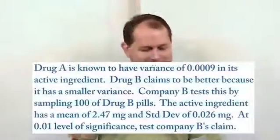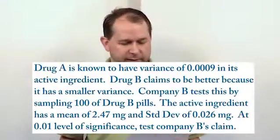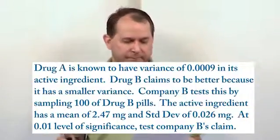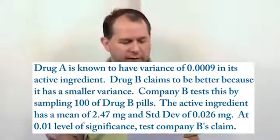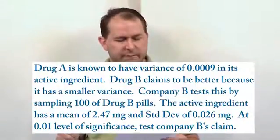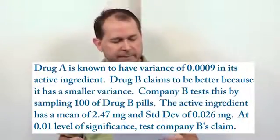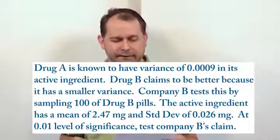If you make a mistake here, I'll show you the pitfalls that will arise as we go. Drug A is known to have a variance of 0.0009 in its active ingredient. Drug B claims to be better because it has a smaller variance in the active ingredient. Company B tests this by sampling 100 of Drug B pills. The active ingredient has a mean of 2.47 milligrams and a standard deviation of 0.026 milligrams. At the 0.01 level of significance, test Company B's claim.